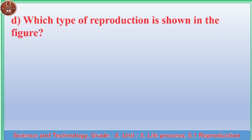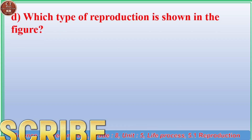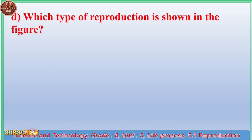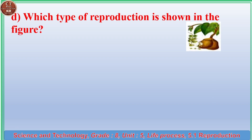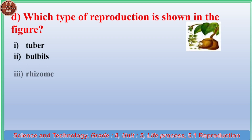(d) Which type of reproduction is shown in the figure? (1) Tuber. (2) Bulbils. (3) Rhizome. (4) Corm.